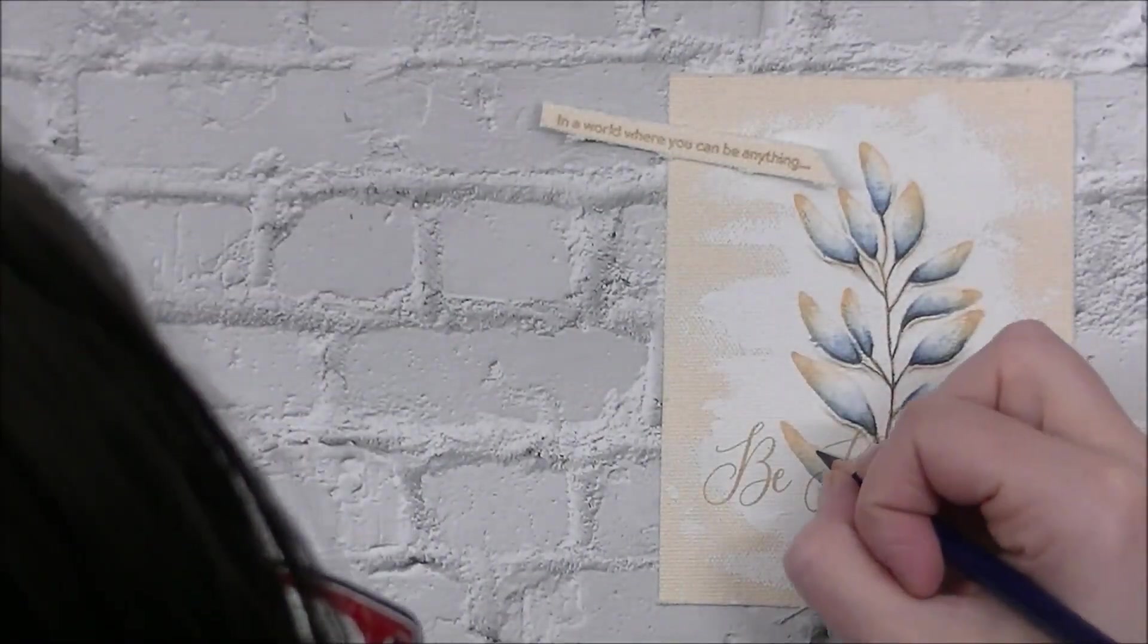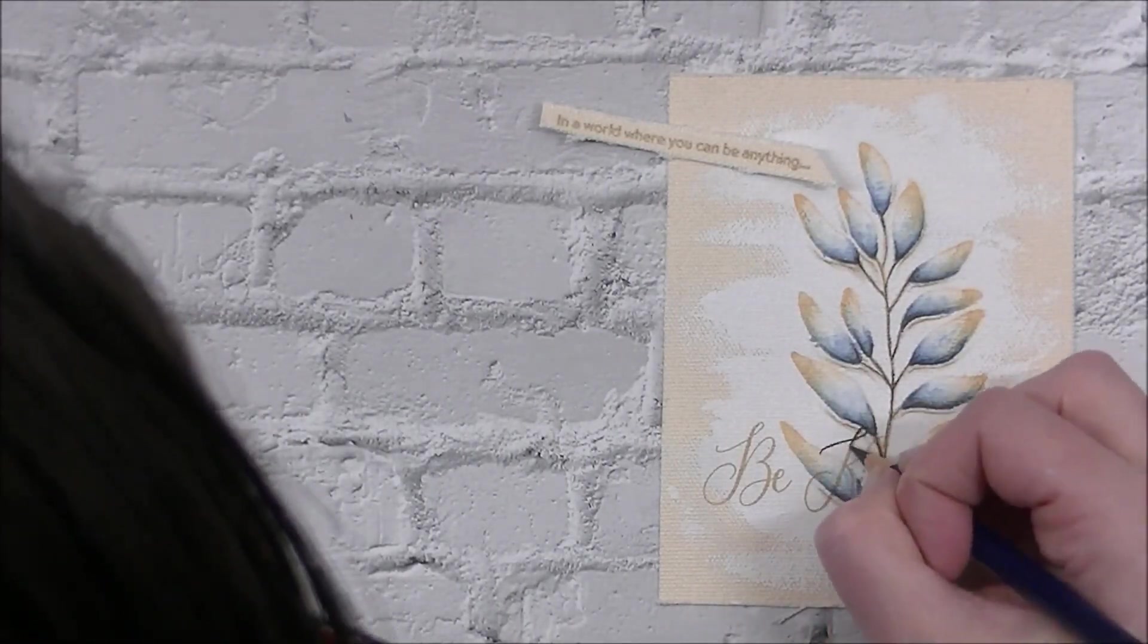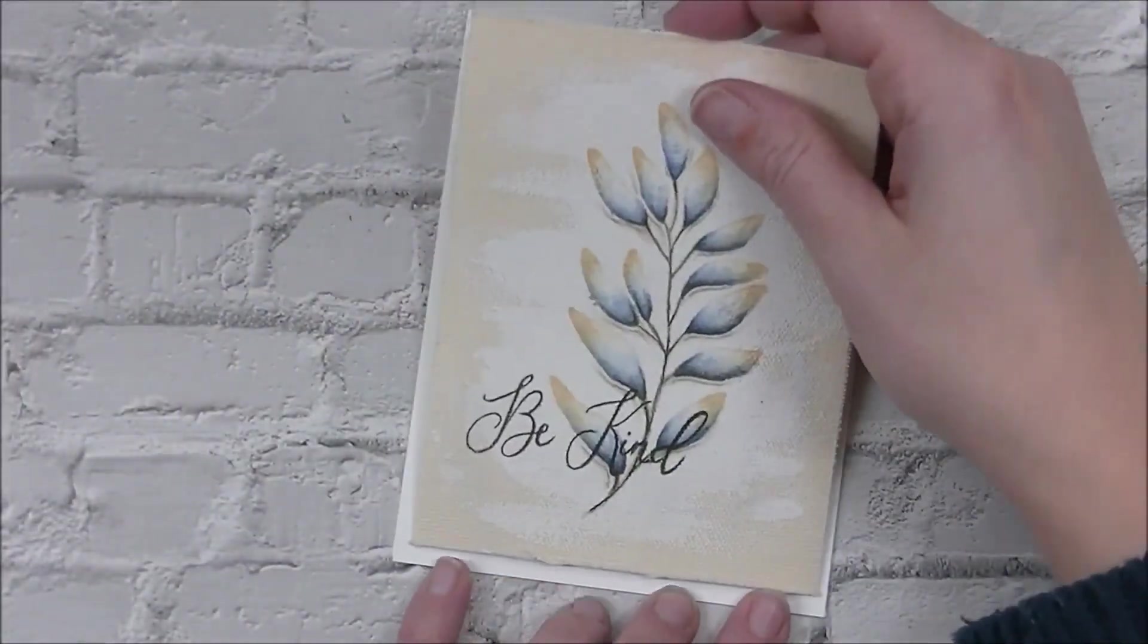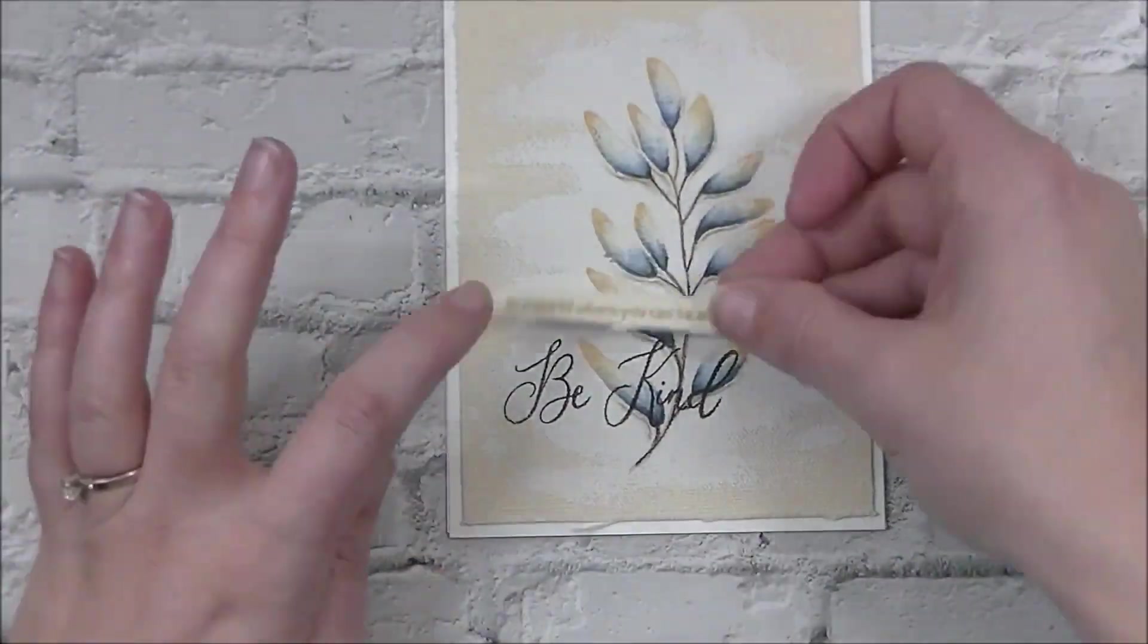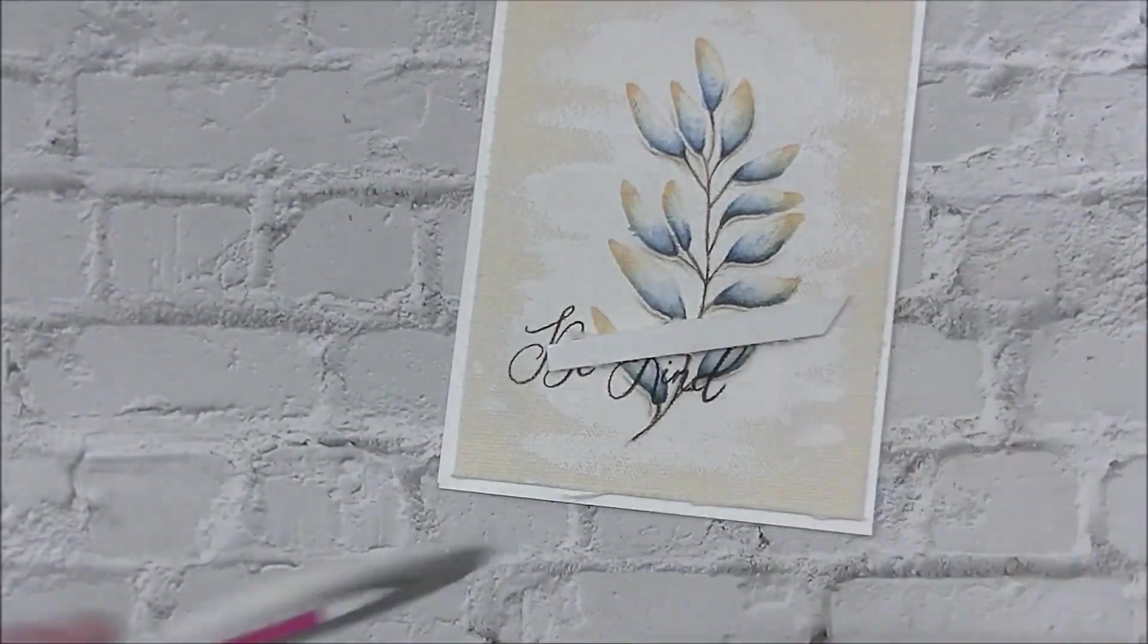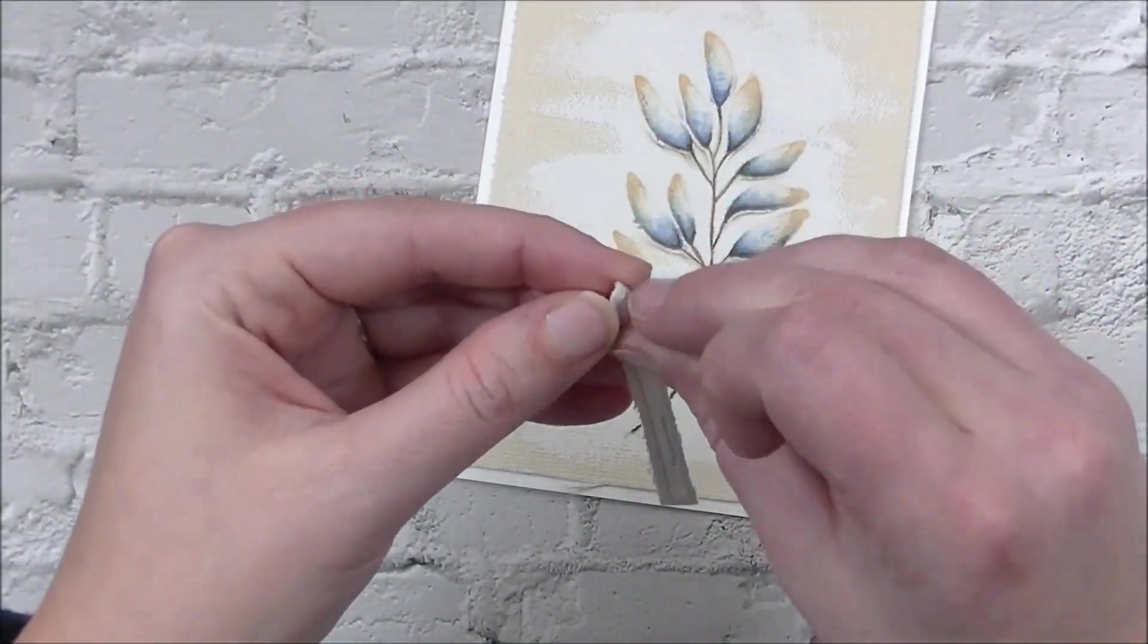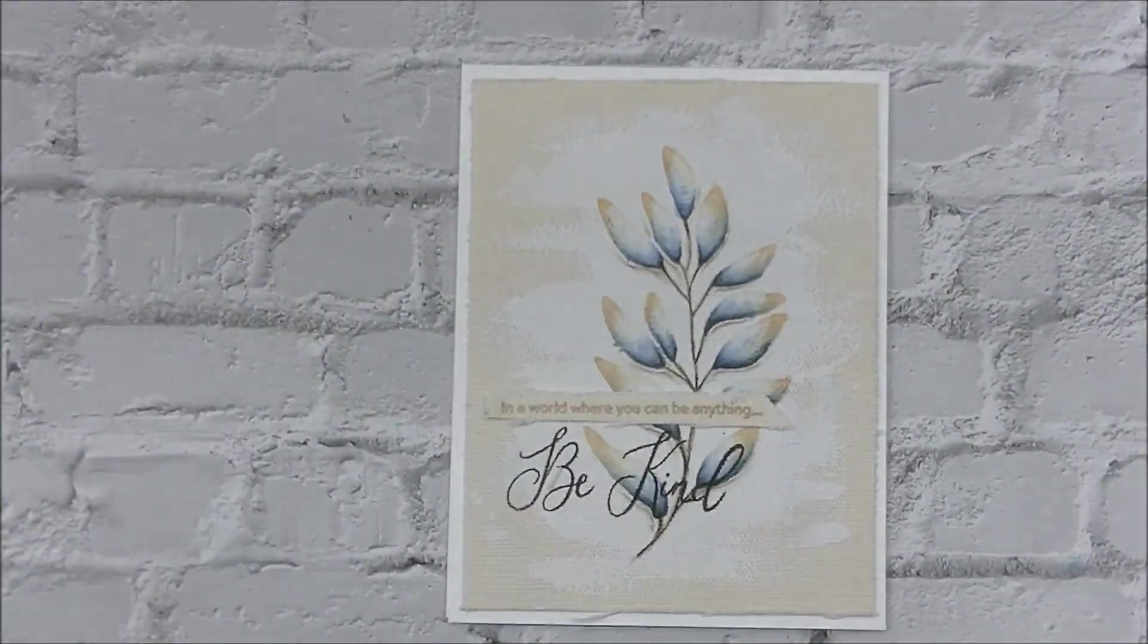Now I have the Be Kind stamp and I'm going to stamp that out with the same khaki ink. Then I decided that it wasn't dark enough because you really can't see it pop off the page in front of that sprig of leaves, so I'm going to go back in with that sepia Inktense pencil and trace over top of all of that. We'll glue that down onto an A2 size top-folding card base and add our little sentiment strip at the top. I didn't put water to set the pencil on the sentiment. I didn't think it needed it, so I just left it as it was.